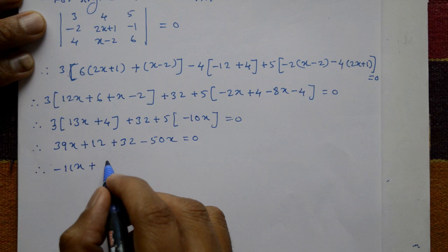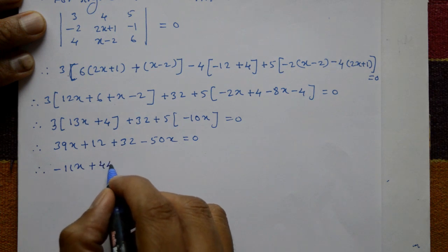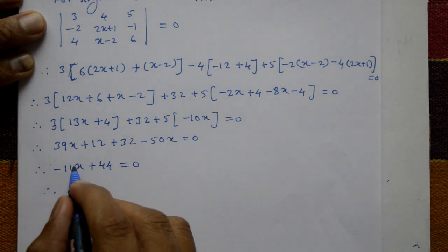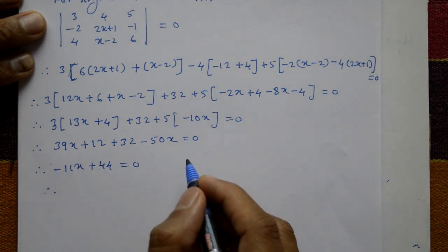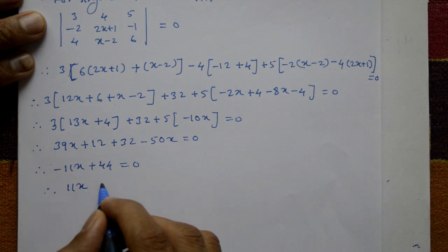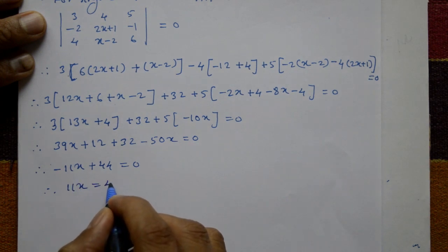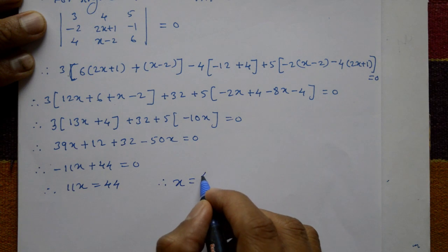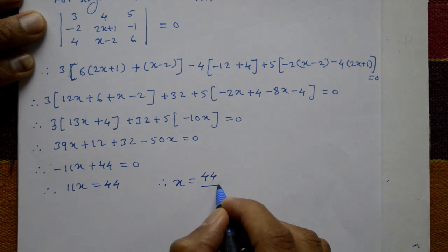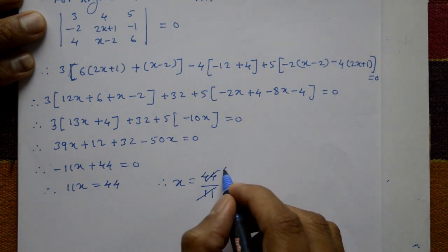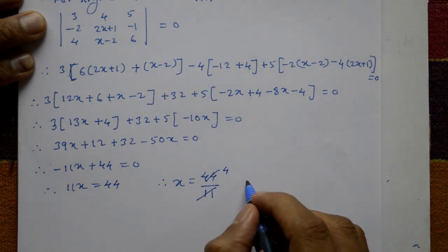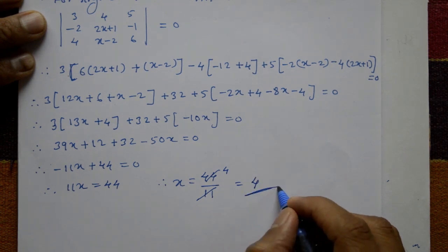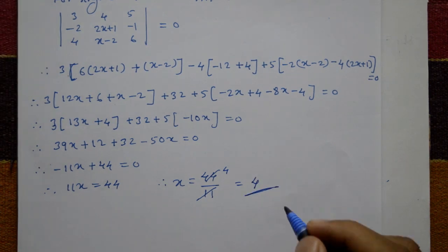Therefore minus 11x plus 44 equals 0, which means 11x is equal to 44. Therefore x is equal to 44 divided by 11, and cancelling gives x is equal to 4. This is the required value of x.